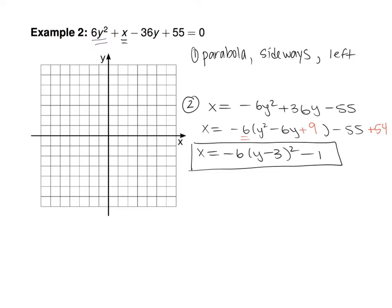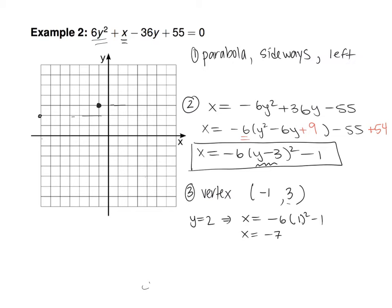This becomes x = −6(y − 3)² − 1. The negative coefficient tells us this parabola opens to the left. The vertex: the number with y gives the y-coordinate (3), and the constant gives the x-coordinate (−1), so the vertex is (−1, 3). Plugging in y = 2 gives x = −6(1)² − 1 = −7, so the point (−7, 2) is also on the parabola. The larger the magnitude of the leading coefficient, the narrower the parabola.